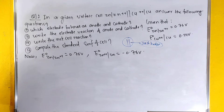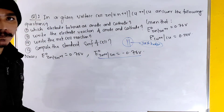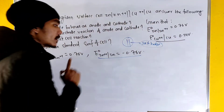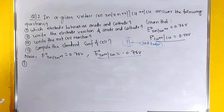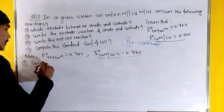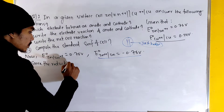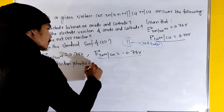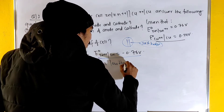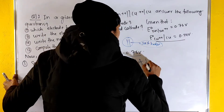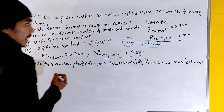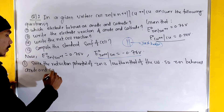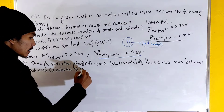Good. Now, what are we going to do? We need to determine the reduction potential. The reduction potential of zinc is lower, and the reduction potential of copper is higher. For Question 1: Which electrode behaves as anode and cathode? Since the reduction potential of zinc is lower than that of copper, zinc behaves as anode and copper behaves as cathode.